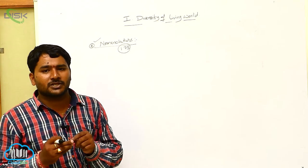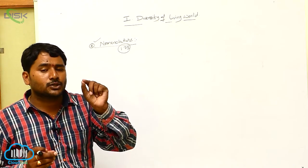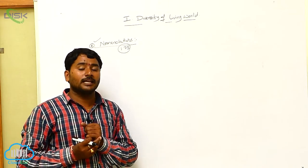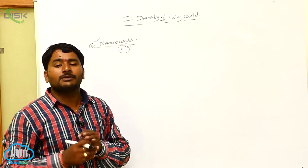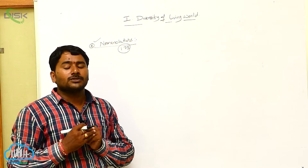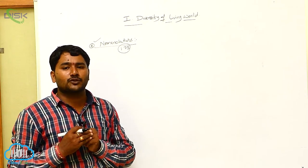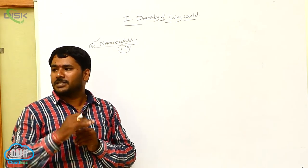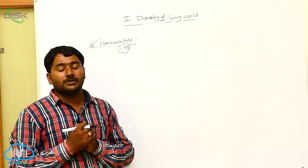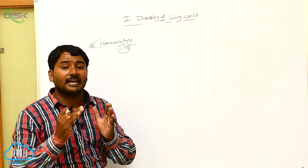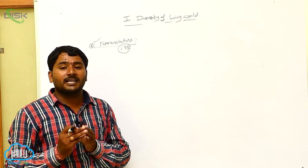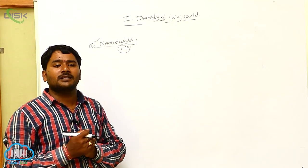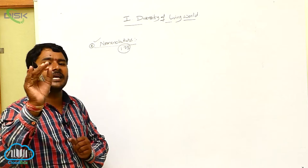So in order to identify a species, each species should have a common or unique name. That name is called a scientific name, which is universally accepted. Each and every organism or animal should be provided with a clear scientific name. That is why the process of naming an animal with a distinct scientific name is called nomenclature. In nomenclature, each and every animal is provided with a clear scientific name.